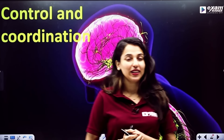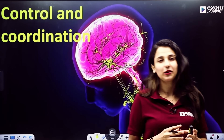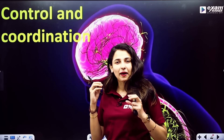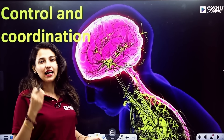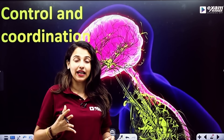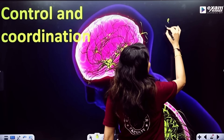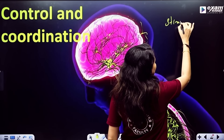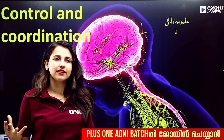If you want to talk about Control and Coordination, we are going to talk about the nervous system and all the activities. We are going to talk about information about the brain, and we are going to talk about stimuli.